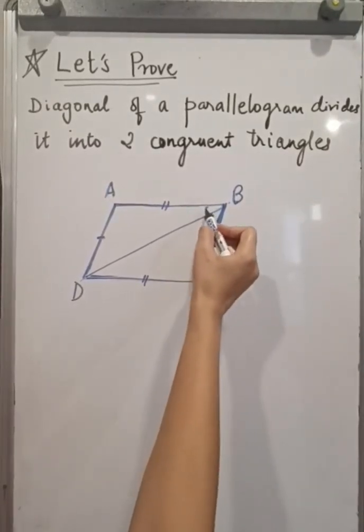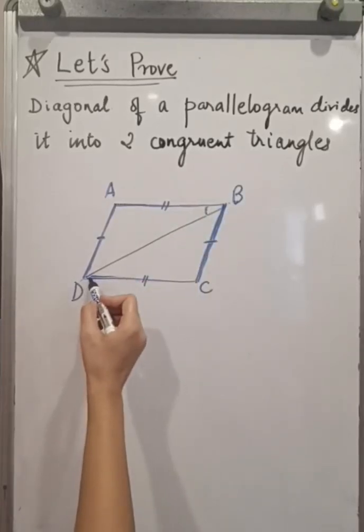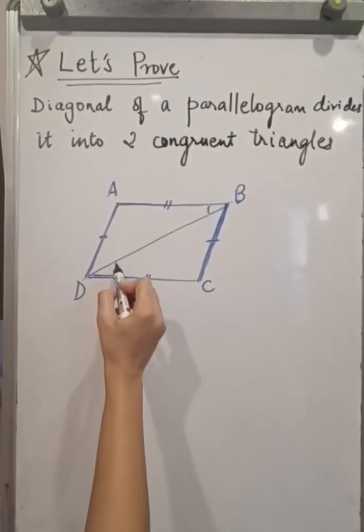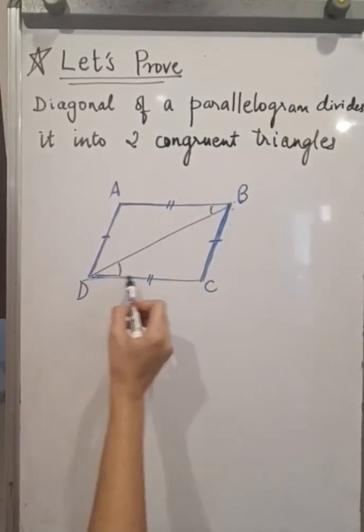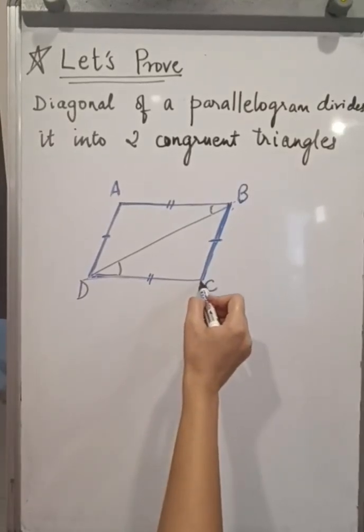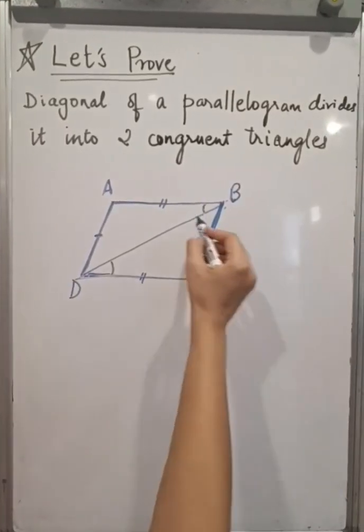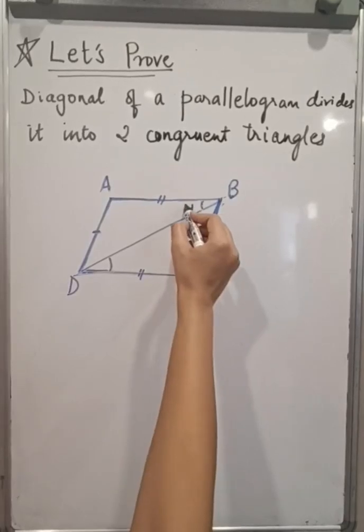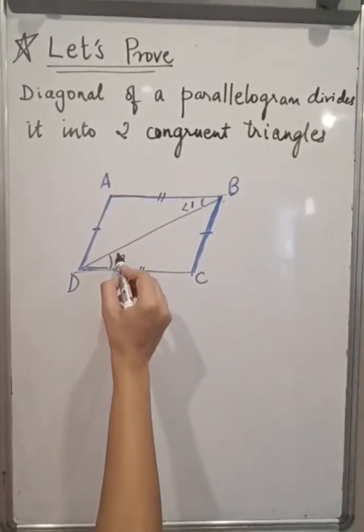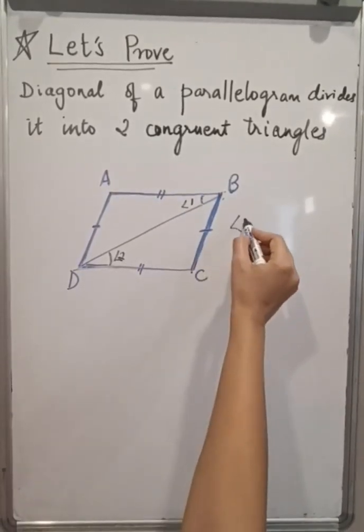So this angle, angle ABD is equal to angle BDC. These are alternate angle pairs. Let's say this is angle 1, this is angle 2. These two angles are equal.